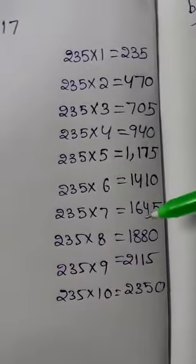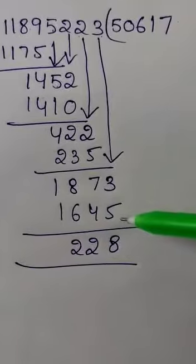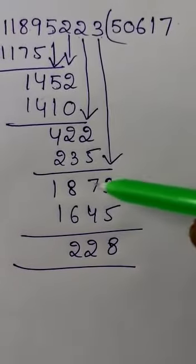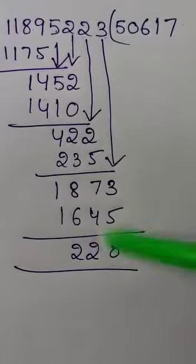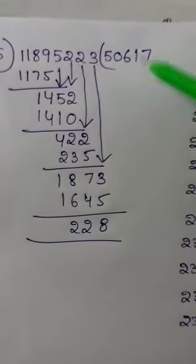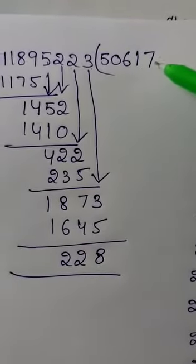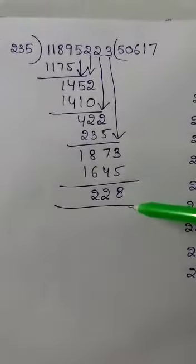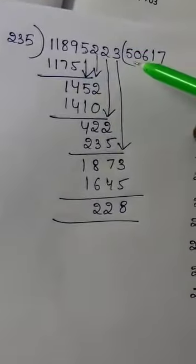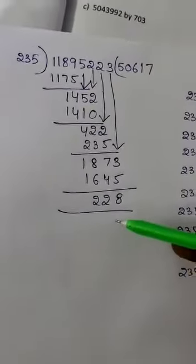1873 is 7 times, so 7 times 1645. Minus: 6 equals 13, minus 5 equals 8, 8 minus 6 equals 2. So 228 equals 566. 50617 divided using the 235 table equals quotient with remainder 228.